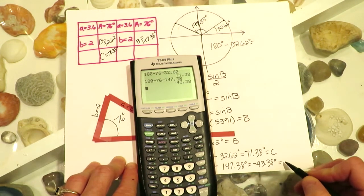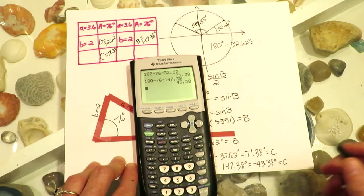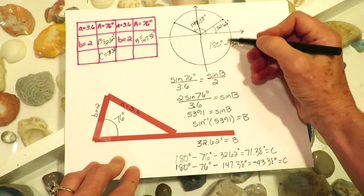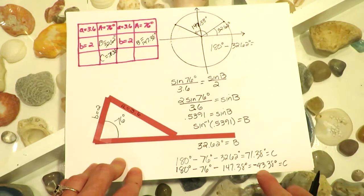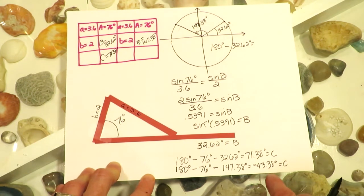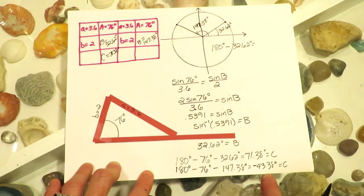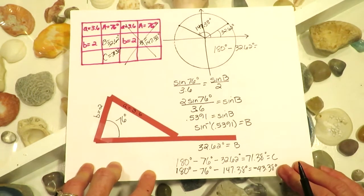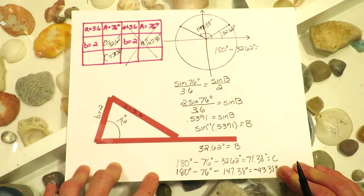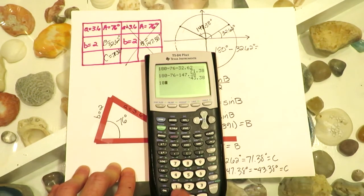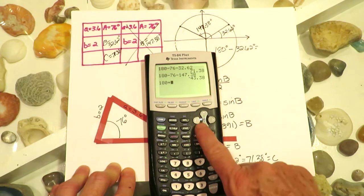And I get negative 43.38. Angle C can't be a negative angle — a negative angle would be in quadrant 4, which is impossible in a triangle. So that's an indication that there's only one possible triangle; we do not have a second possibility. Another way to see it: if you add 76 and 147.38, you get 223.38 — angles A and B together already exceed 180.